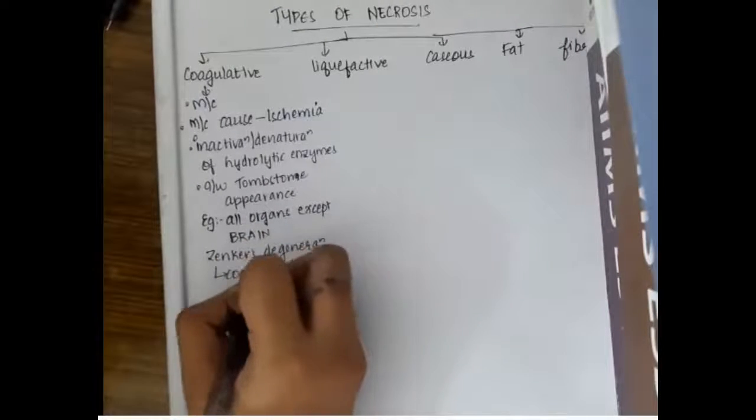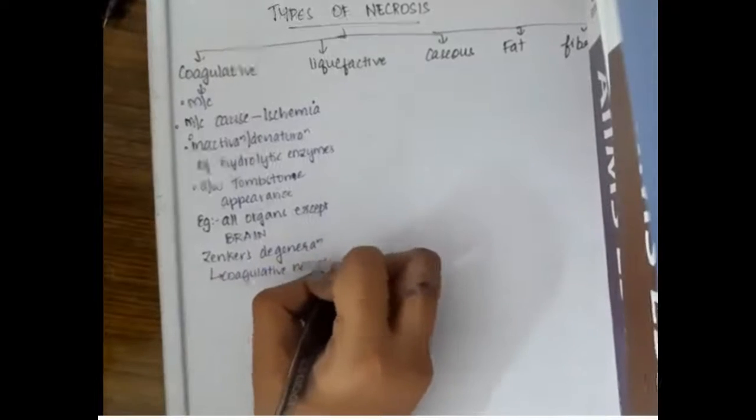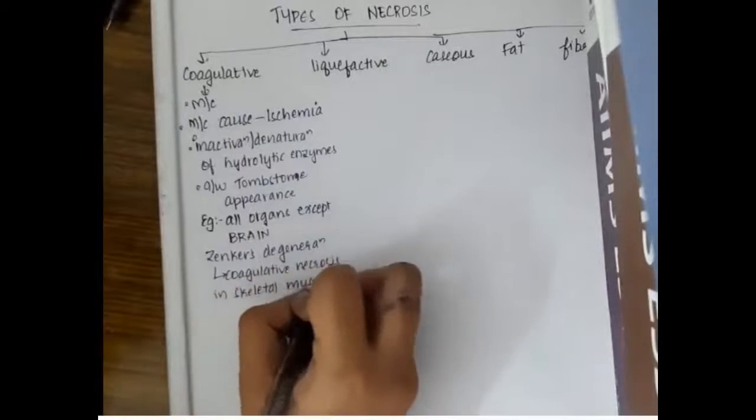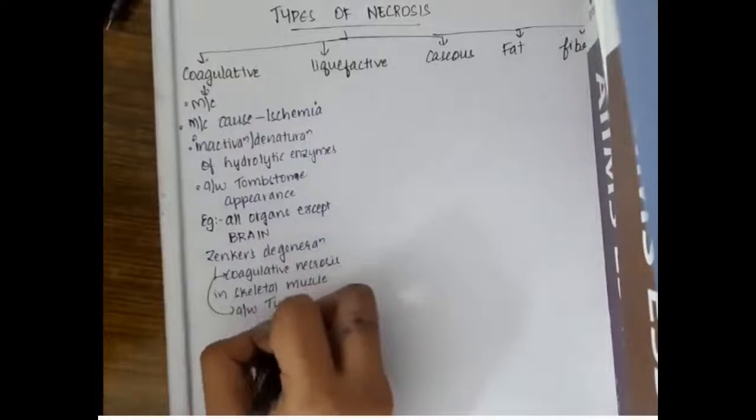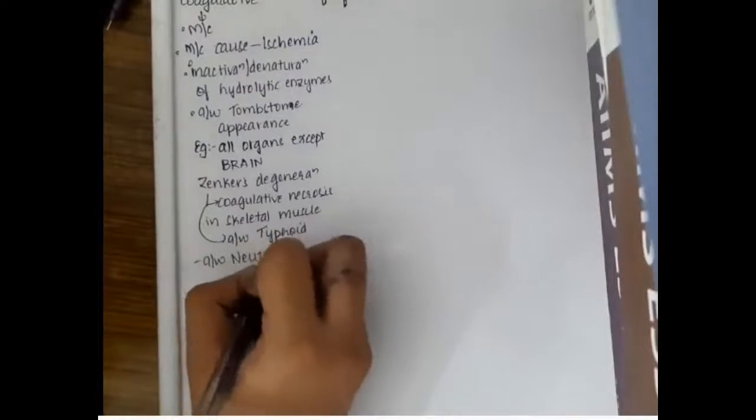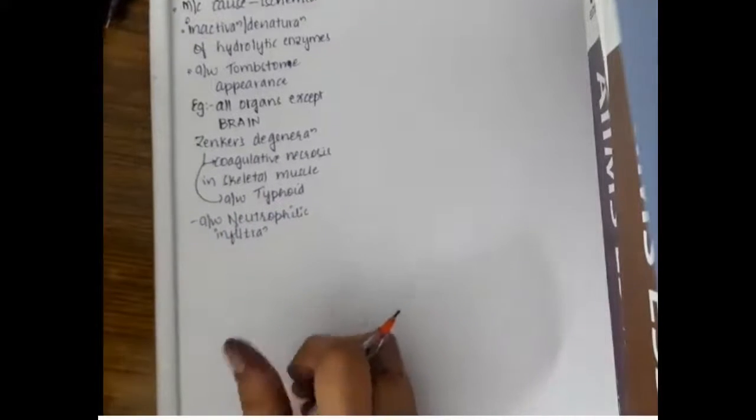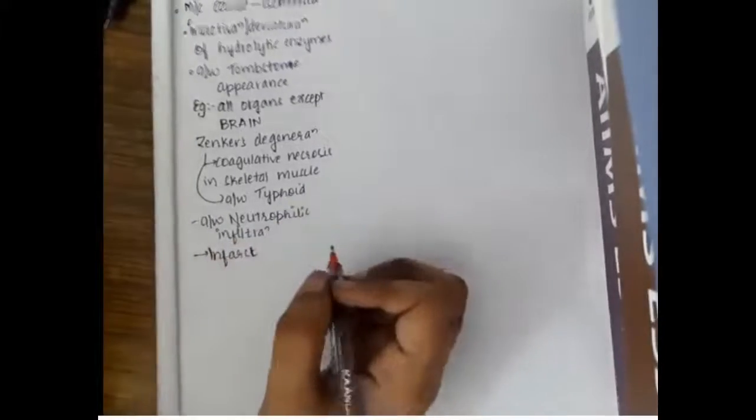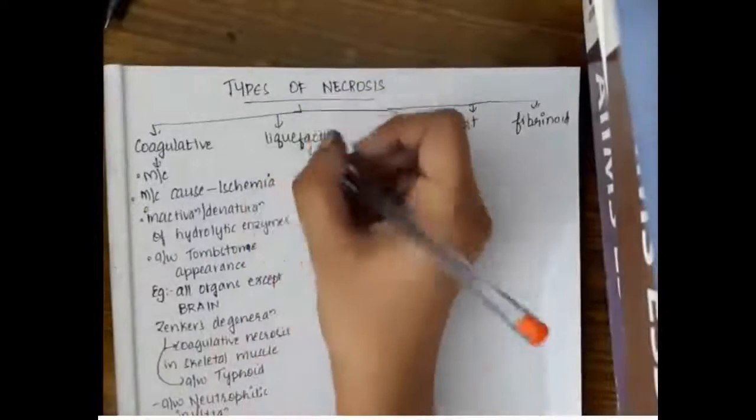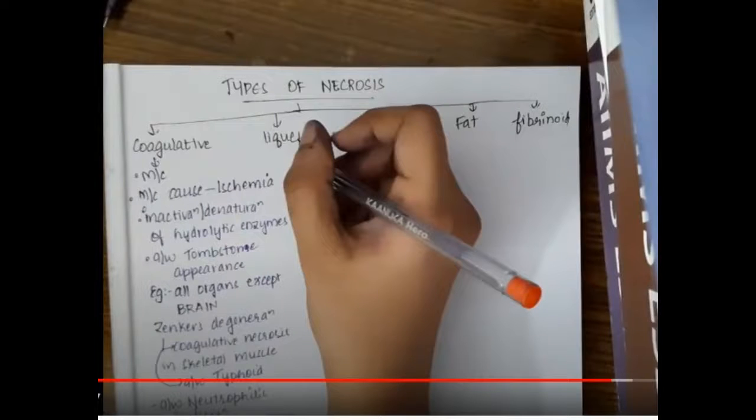In coagulative necrosis, Zenkar's degeneration is a type seen in skeletal muscles which is also associated with typhoid. It is also associated with neutrophilic infiltration, and all types of infarcts are coagulative necrosis. One important thing in coagulative necrosis is there is no loss or damage of tissue architecture.